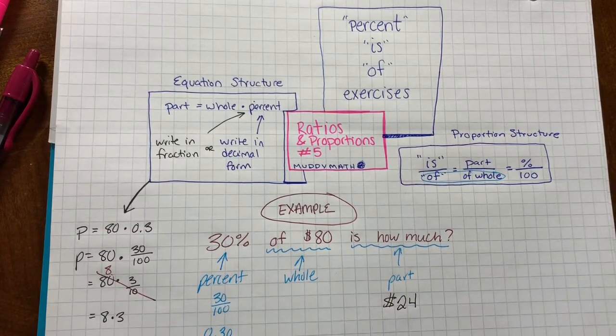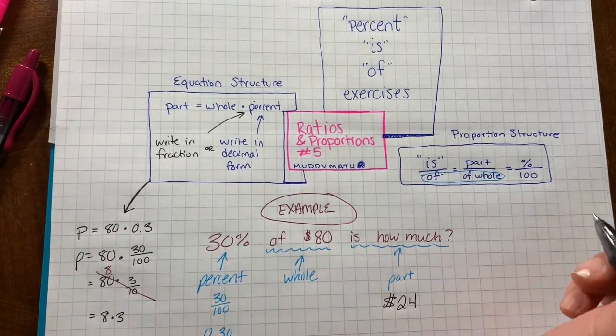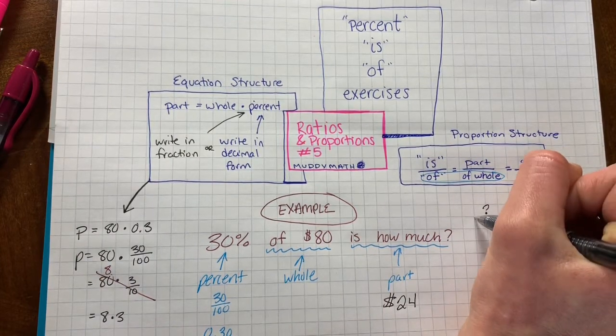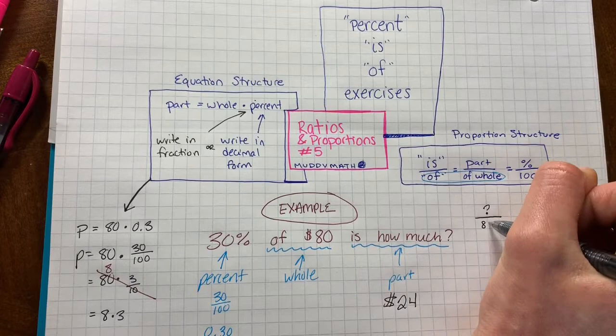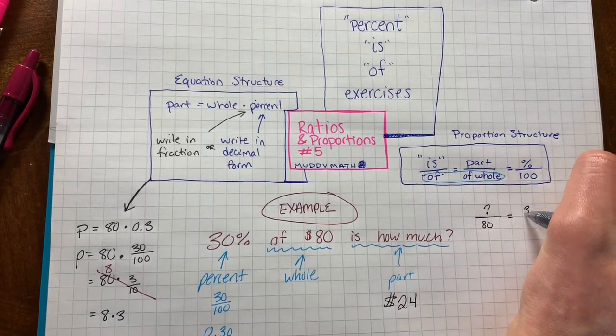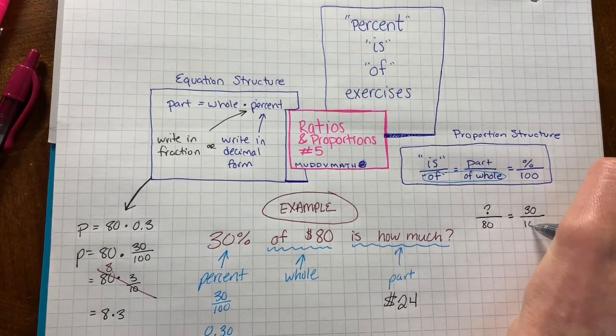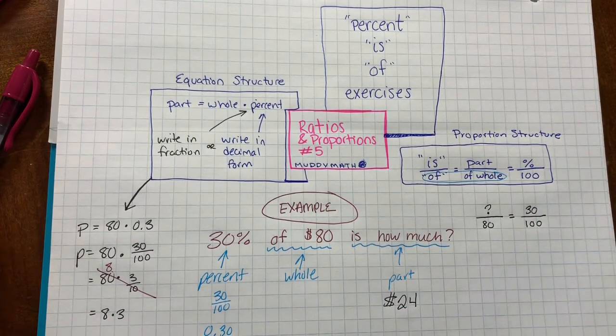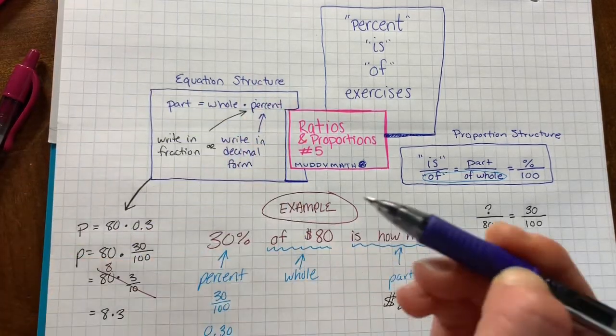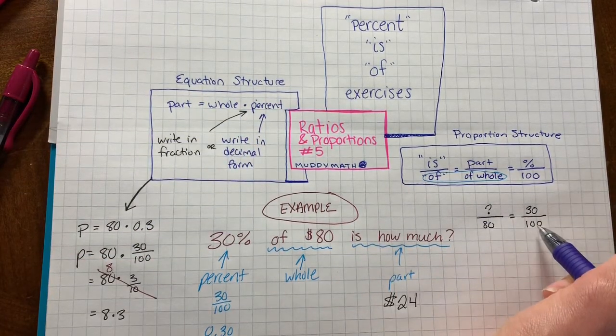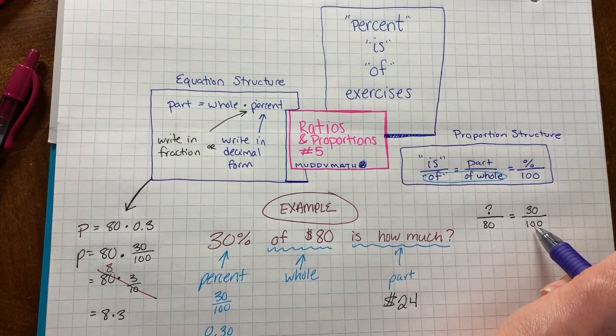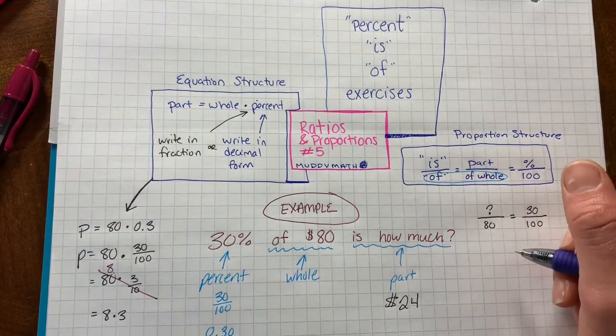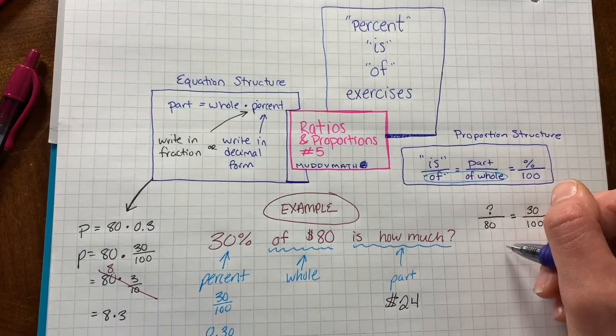Let's check our work using the proportion structure. I don't know is, so I'll use the question mark. Of 80 equal to 30 of 100. To solve this proportion, I can use equivalent fractions or a ratio table to solve this proportion.